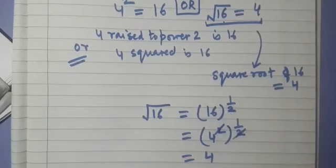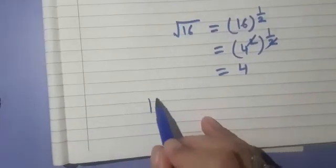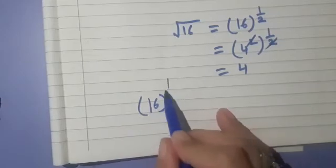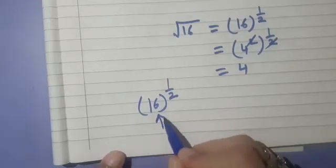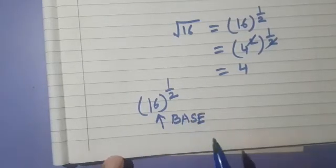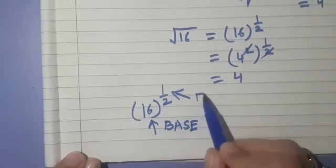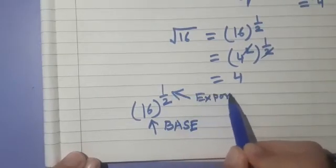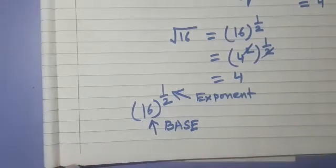So if we write 16 raised to the power 1 by 2, here 16 is the base and 1 by 2 is the exponent. Note that 1 by 2 is a rational number, so this is an example of a rational exponent.